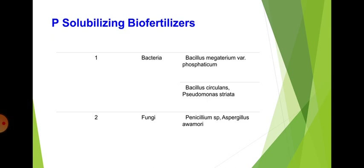Phosphorus solubilizing biofertilizers include bacteria such as Bacillus megaterium var. phosphaticum, Bacillus circulans, and Pseudomonas striata, as well as fungi such as Penicillium species and Aspergillus awamori.